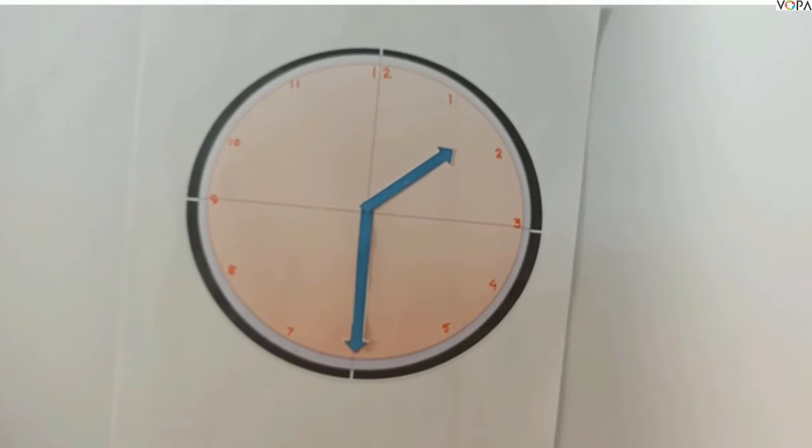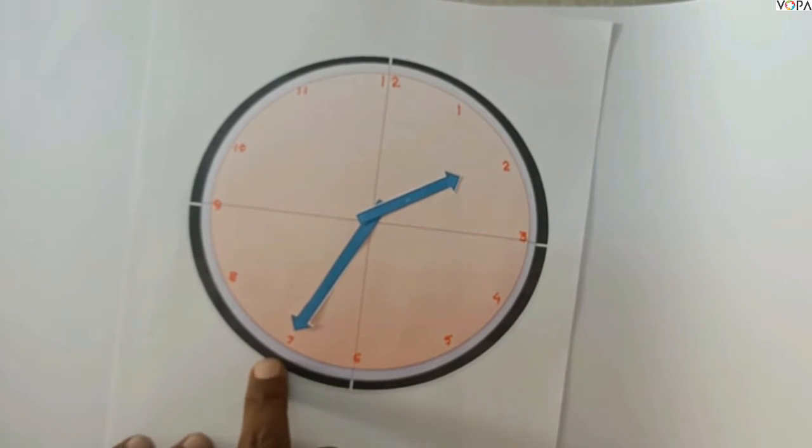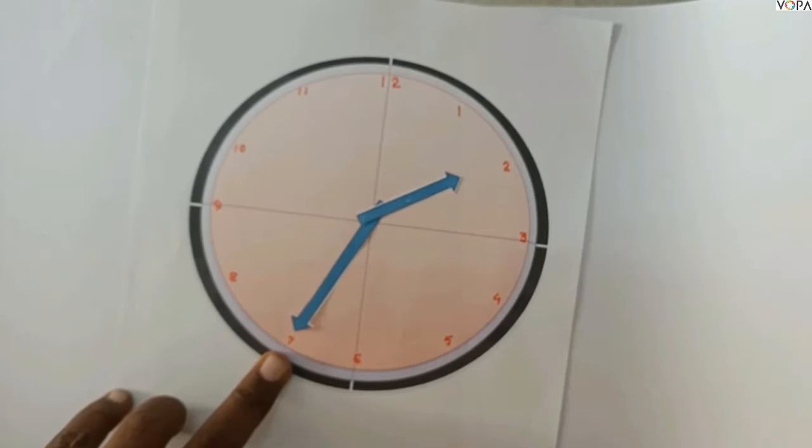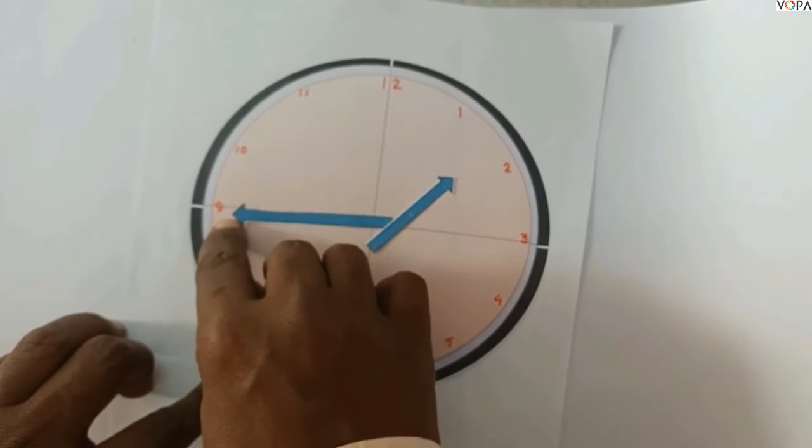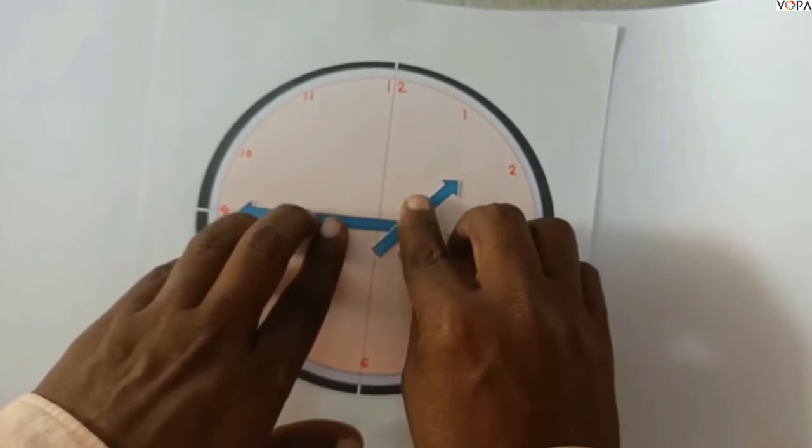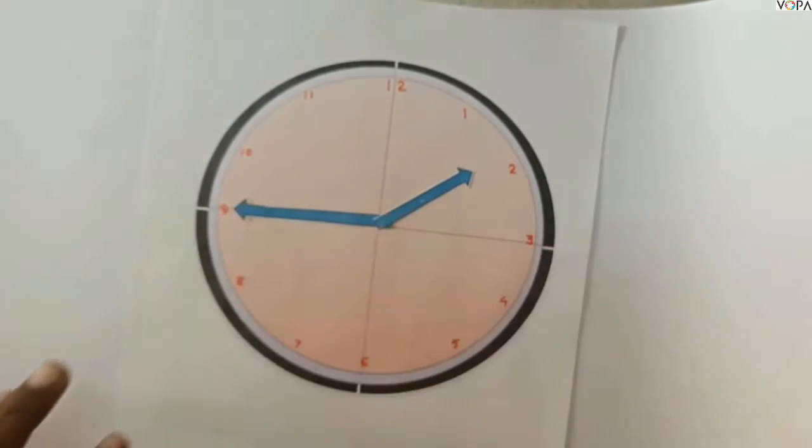When the minute hand comes to seven, it means one past 35 minutes. When it goes to nine, it means quarter to two.